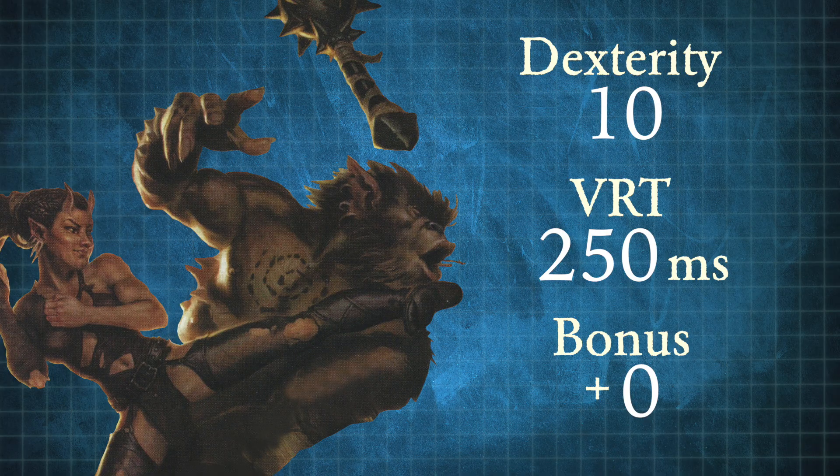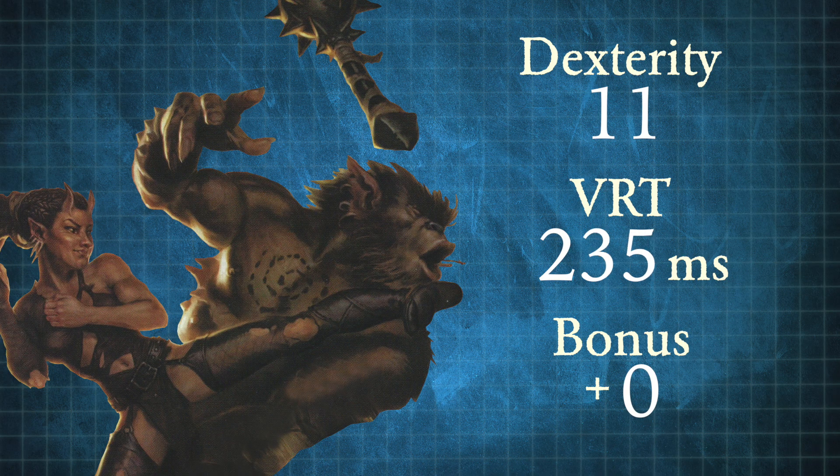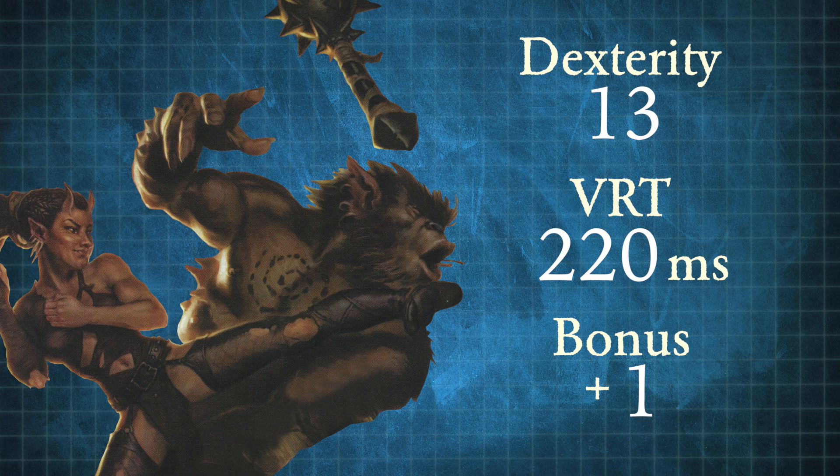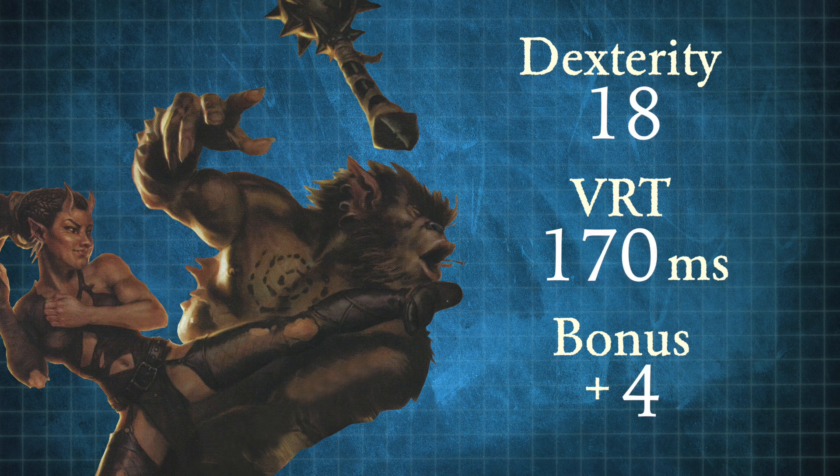You can see here that the math unfolds pretty easily with each one point of increase in dexterity corresponding to a 10 millisecond decrease in reaction time, and each plus one of dexterity bonus corresponding to a 20 millisecond improvement over the average performance.